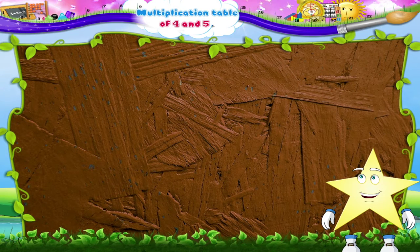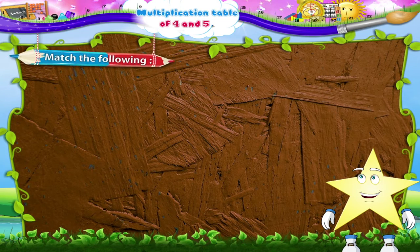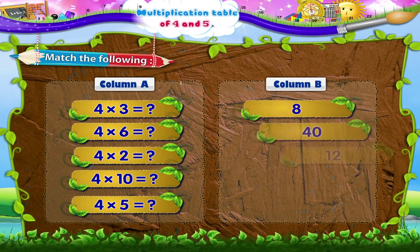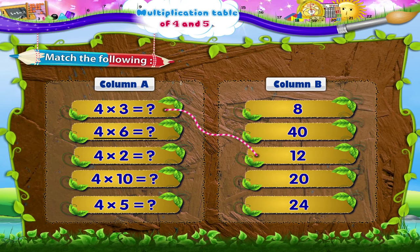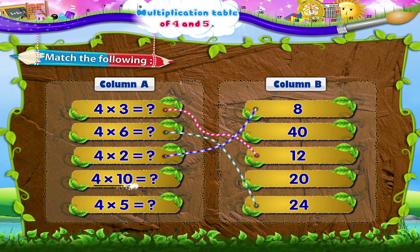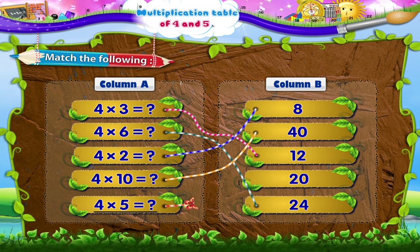Okay now, Starry, using the four times table, match the columns. The first question in column A is: what are four threes? Yes, four threes are twelve. Starry, can you answer the next question? Yes, four sixes are twenty-four. How much is four times two, Starry? Yes, eight. Next, four tens are forty. The last one is four times five — it is equal to twenty.